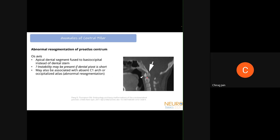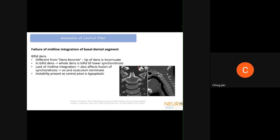Abnormal resegmentation can also affect other structures beyond the apical dental segment, being associated with an absent C1 arch or an occipitalized atlas. Another central pillar abnormality occurs when the two ossification centers for the basal dens fail to fuse before birth, giving rise to a bifid dens. This differs from dens bicornis, where only the tip of the dens is bicornuate — dens bicornis is not associated with instability. In the bifid dens, the entire structure is bifid all the way to the lower synchondrosis, midline integration is affected, and it can be associated with os odontoideum or ossiculum terminale.